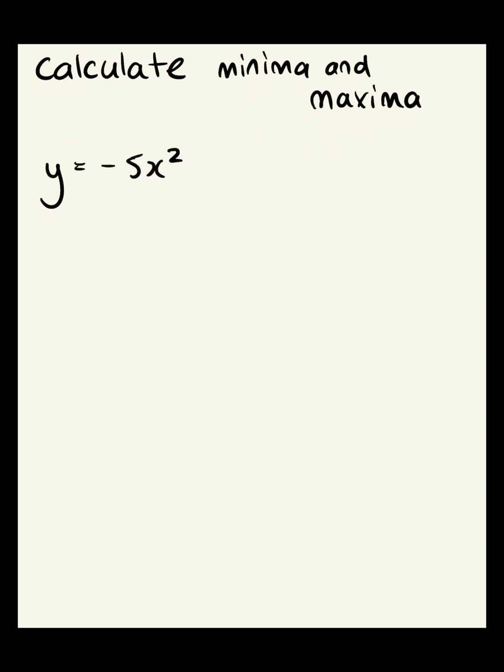So the function that we've got here today is negative 5x squared plus 4x minus 3. We're going to be calculating whether this one has a minima or a maxima. The first thing we would do is find the derivative. So the first derivative is using our power rule. It's going to be 2 times negative 5x to the power of 2 minus 1, 4 times 1x to the power of 1 minus 1.